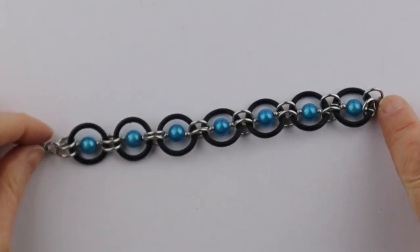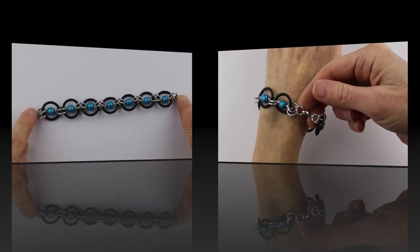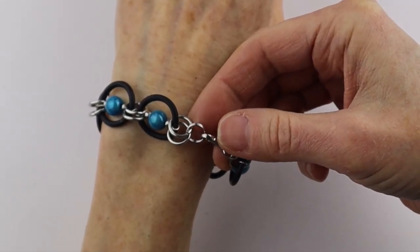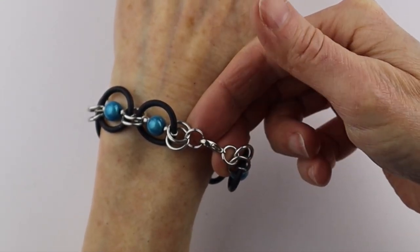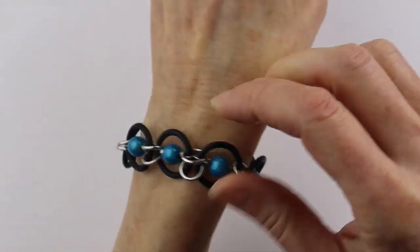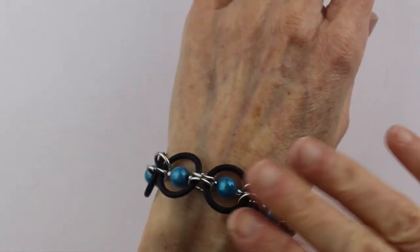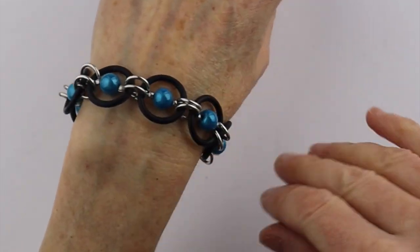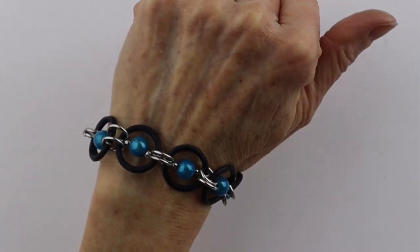If you need to add extra jump rings on there to make it longer, that's not a problem at all. I have very thin wrists, so I just kept it to a minimum. There's our finished bracelet. It's nice and dangly and looks super funky with the jump rings.